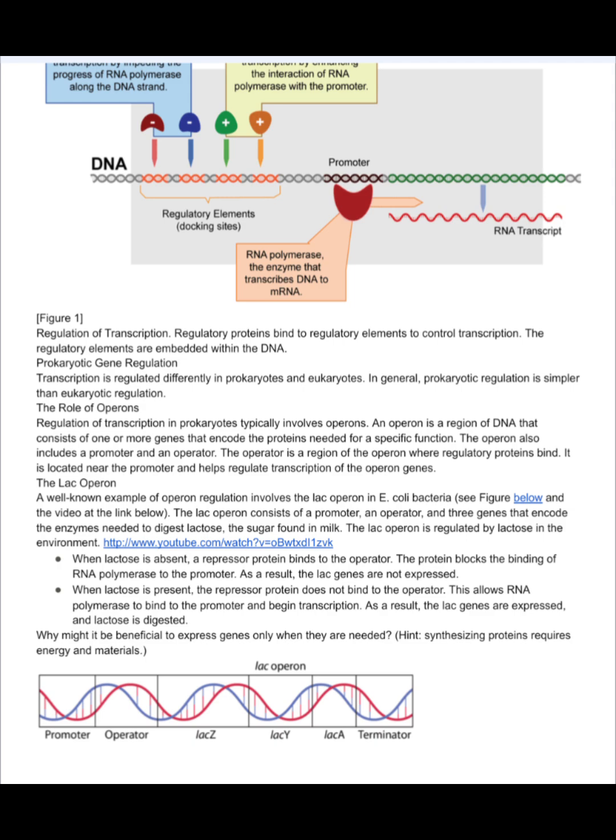Transcription is regulated differently in prokaryotes and eukaryotes. In general, prokaryotic regulation is simpler than eukaryotic regulation. Regulation of transcription in prokaryotes typically involves operons. An operon is a region of DNA that consists of one or more genes that encode the proteins needed for a specific function. The operon also includes a promoter and an operator. The operator is a region of the operon where regulatory proteins bind. It is located near the promoter and helps regulate transcription of the operon genes.